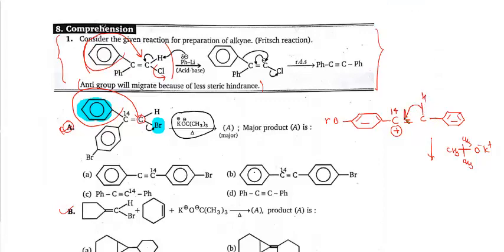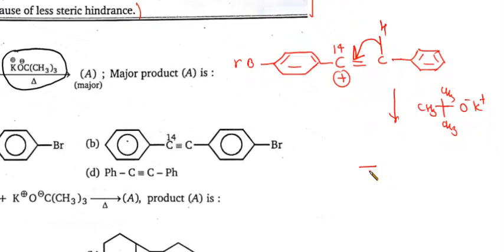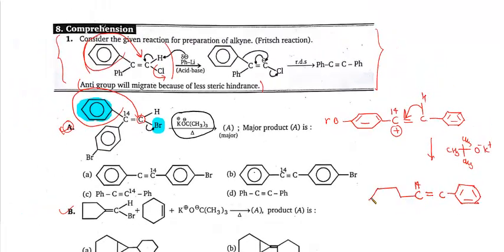When this hydrogen leaves, see what product forms: C — which is C14 (I'm writing 14 to distinguish this carbon from the other one). Add one phenyl group here, add another phenyl group here, add a Br group, and since two bonds were already there and this hydrogen bond also goes, a triple bond forms. See carefully in which option this is given — it is given in option A, so the correct answer for A is A.